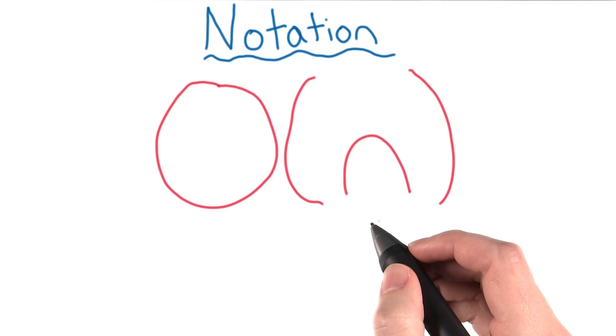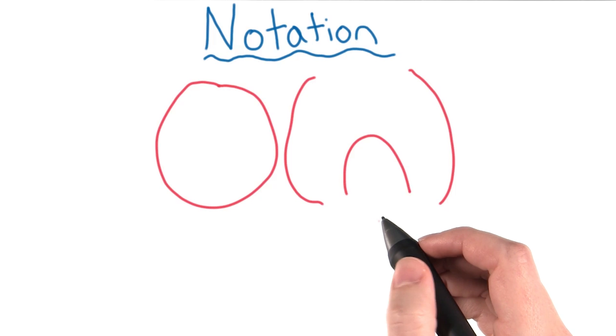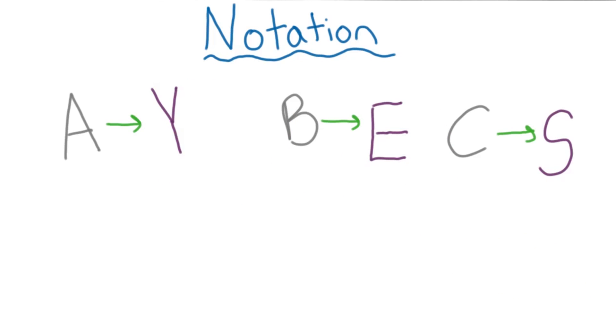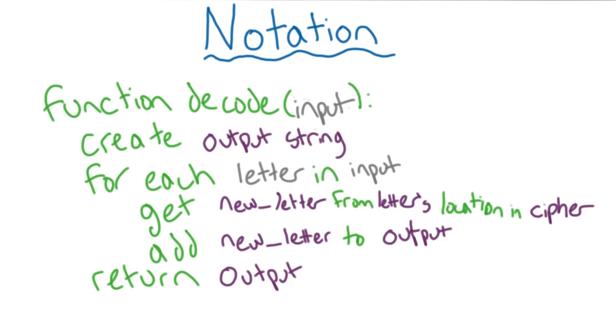So what does the algebraic expression mean in this case? Well, n represents the length of an input to your function. Let's say you received a secret coded message from one of your friends and a cipher that tells you which letter maps to what. You want to automatically decode the coded messages with the cipher your friend gave you.